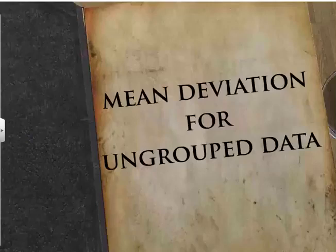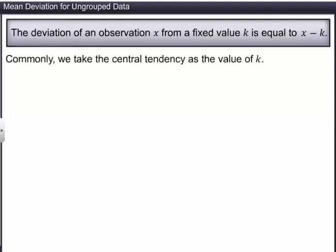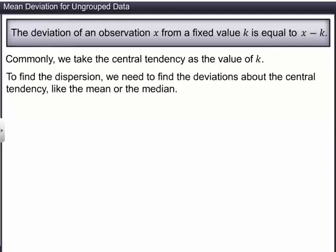In this module, you will learn to find the mean deviation for ungrouped data. We know that the deviation of an observation x from a fixed value k is equal to x minus k. For the sake of convenience, we take the mean or the median as the fixed value k. To find the dispersion of the observations from its central tendency like the mean and the median, we need to find the deviations about the central tendency.